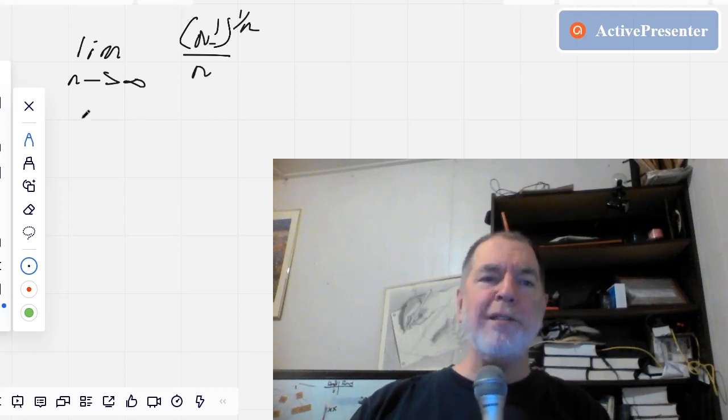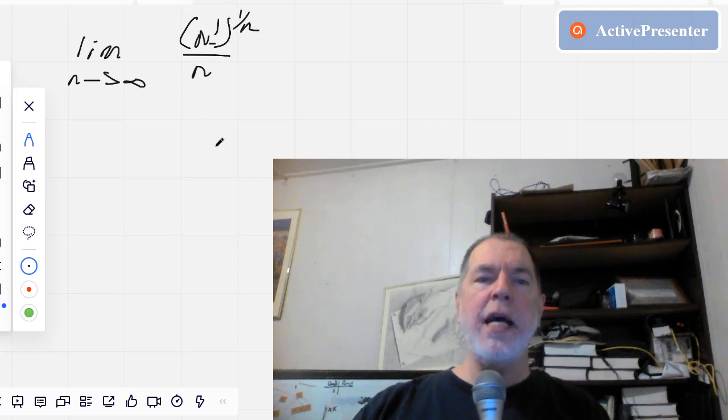Alright, so the puzzle that we're working on today is the limit as n goes to infinity of n factorial, all that's to the power of 1 over n, and then we take that and divide it by n. And a hat tip to Dr.